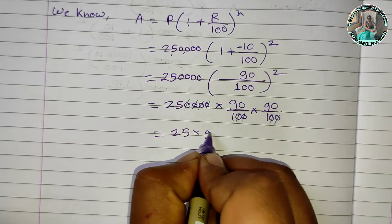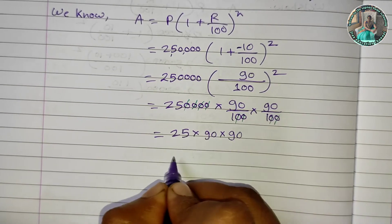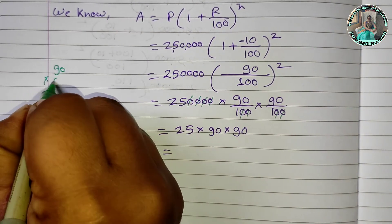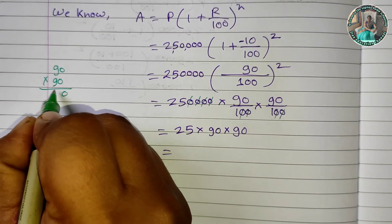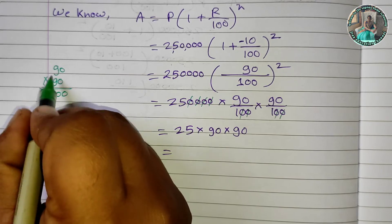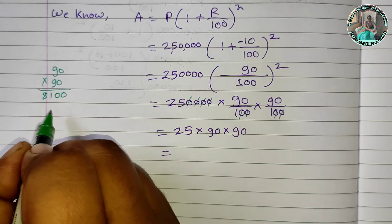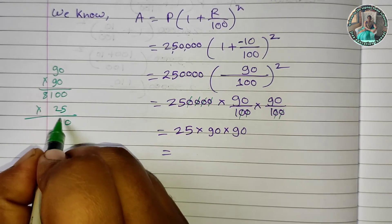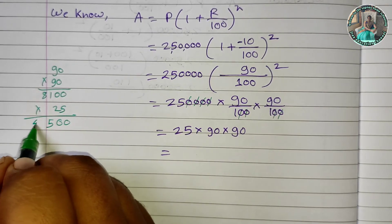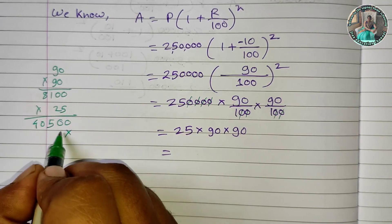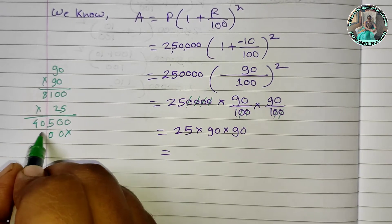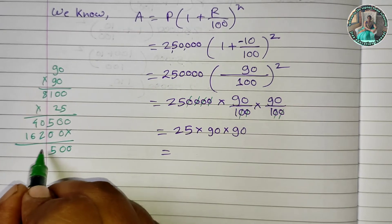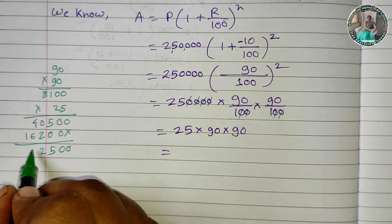Let's calculate 25 × 90 × 90. First, 90 × 90 = 8,100. Then 25 × 8,100: working it out step by step — 25 × 1 = 5, 25 × 8 = 200, giving us 2,02,500.